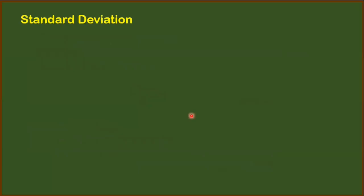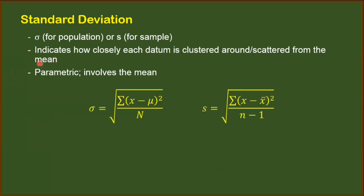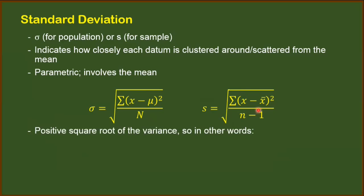As for standard deviation, it is the third measure of variation, symbolized by small letter sigma for population and small letter s for sample. It indicates how closely each datum is clustered or scattered from the mean. Since it involves the mean, it is also considered a parametric measure of variation. The formulas for population and sample standard deviation are simply the positive square root of their respective variances. In other words, we can reduce these formulas to: take the square root of the variance, regardless of whether that is for population or for sample.